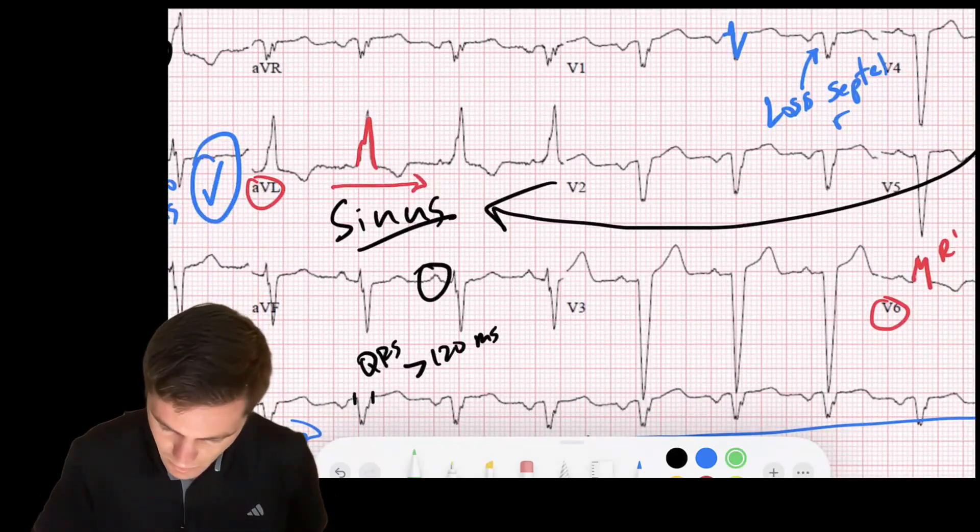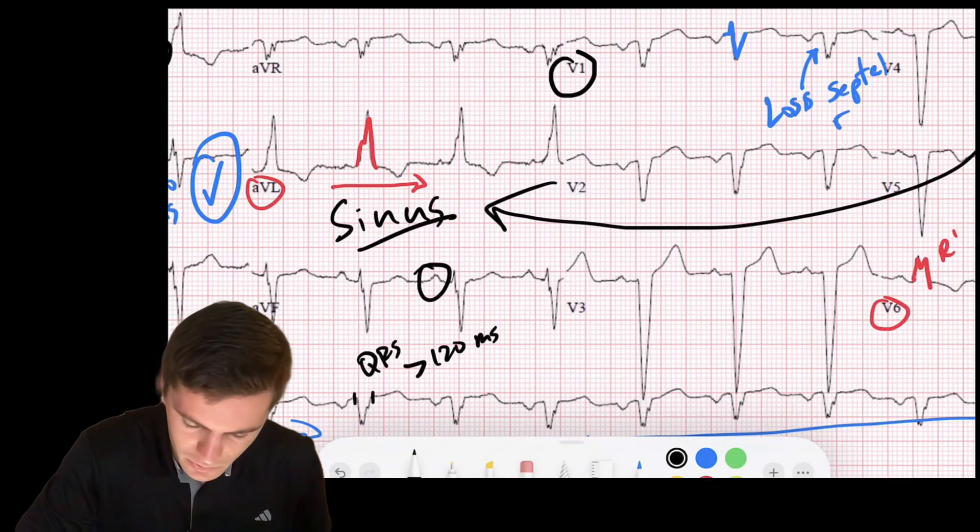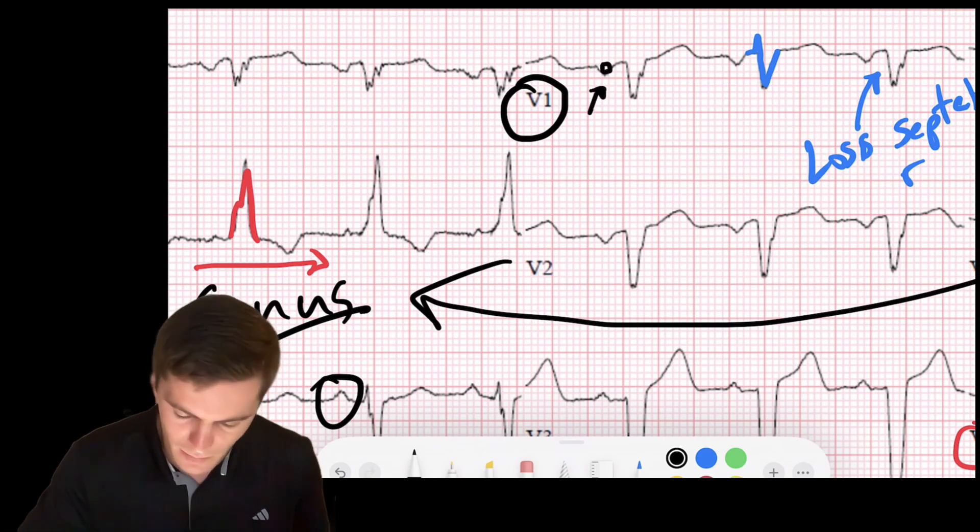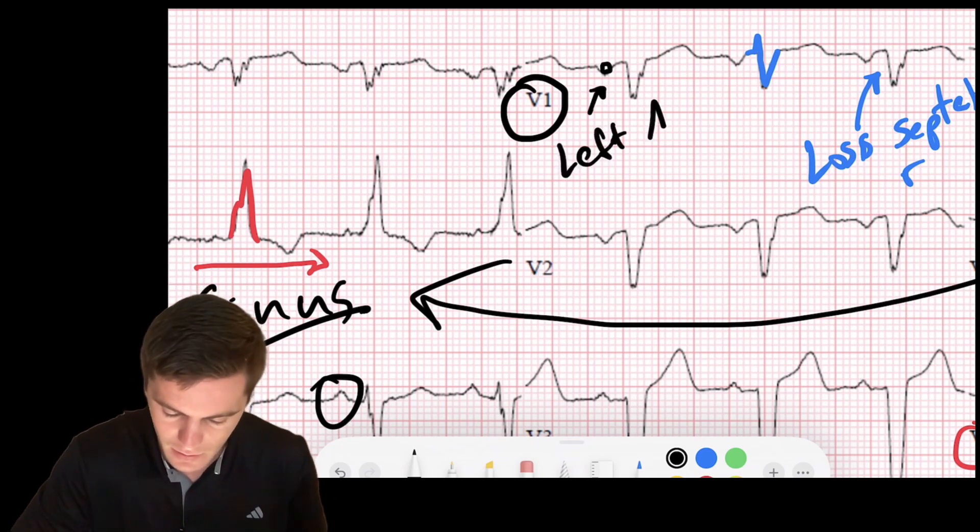And left atrial enlargement, remember, we look in V1. In V1, left atrial enlargement is when the P wave, the negative aspect of the P wave is big enough to fit a 1 by 1 millimeter small box inside of it. And it looks like we can. So that is left atrial enlargement.